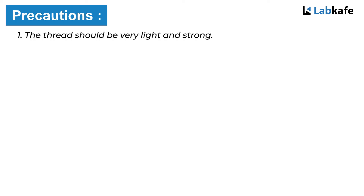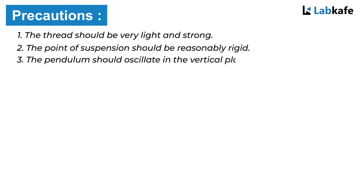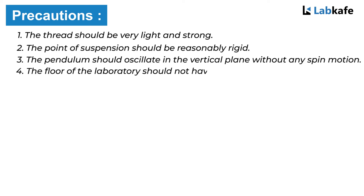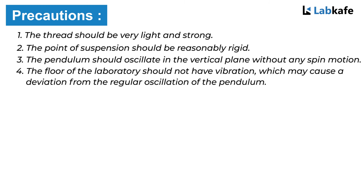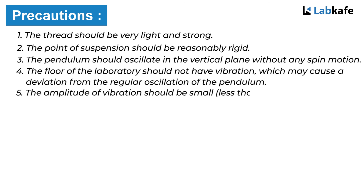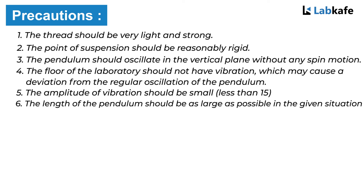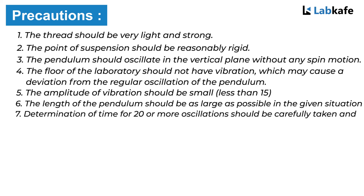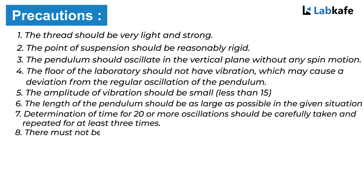Precautions: The thread should be very light and strong. The point of suspension should be reasonably rigid. The pendulum should oscillate in the vertical plane without any spin motion. The floor of the laboratory should not have any vibration. The amplitude of vibration should be very small, less than 15 degrees. The length of the pendulum should be as large as possible. The time for 20 or more oscillations should be carefully taken and repeated at least 3 times. There must not be a strong wind blowing during the experiment.